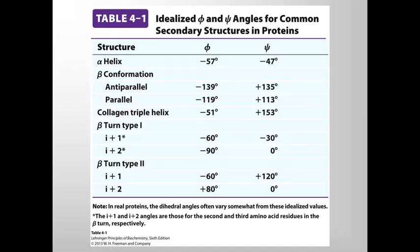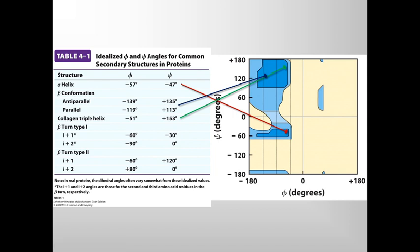Idealized phi and psi angles for common secondary structural elements in proteins are shown here. There are exceptions wherein proteins have secondary structural elements that deviate from the idealized values for phi and psi angles. However, on average, proteins have these phi and psi angles for their secondary structural elements. Let us look at these numbers in a little detail. This slide gives a representation as to how you can connect the phi and psi values of individual secondary structural elements and map them on a Ramachandran plot.